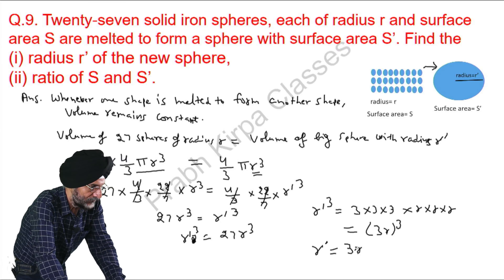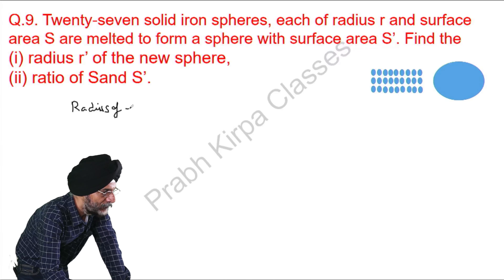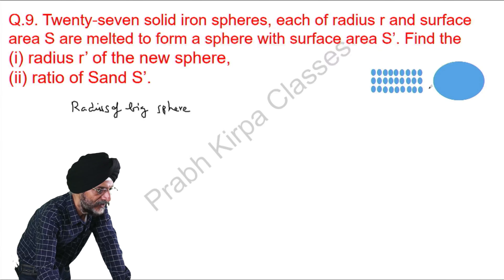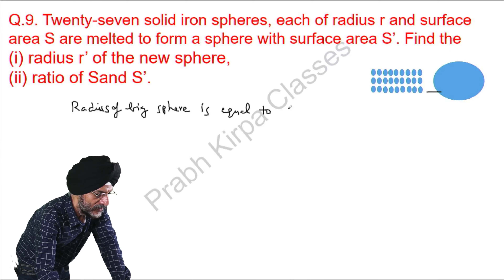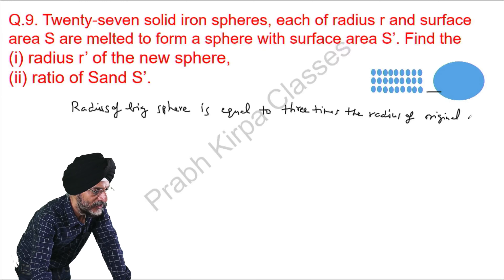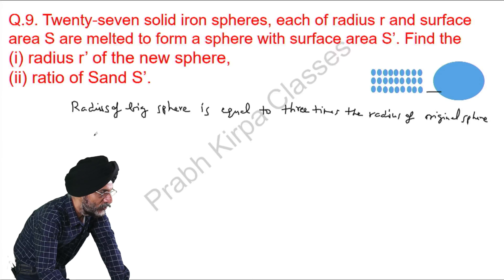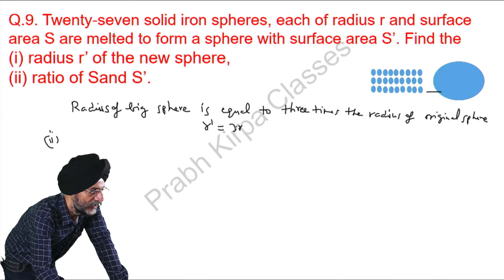So, to summarise what we have calculated so far: the radius of the big sphere, R dash, is equal to 3 times the radius of the small sphere R. That is, R dash equals 3R. This is our first answer.